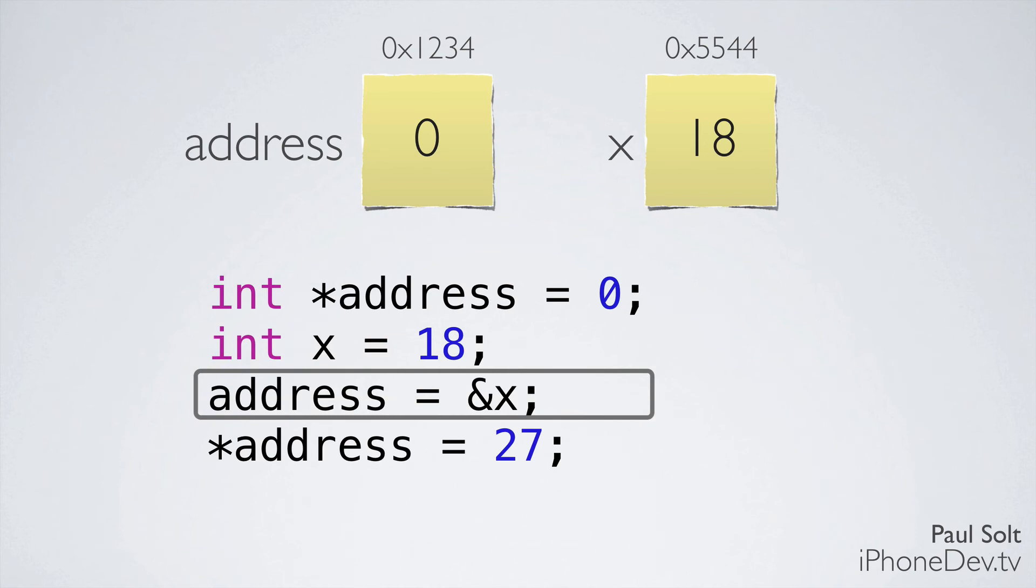On the next line, we're going to be taking the address of x and storing it in our address variable. The ampersand means the address of, and so we would read that address equals address of x. And when we do that, we get that 0x5544 value and we store that. So now we know where to go to change the information.